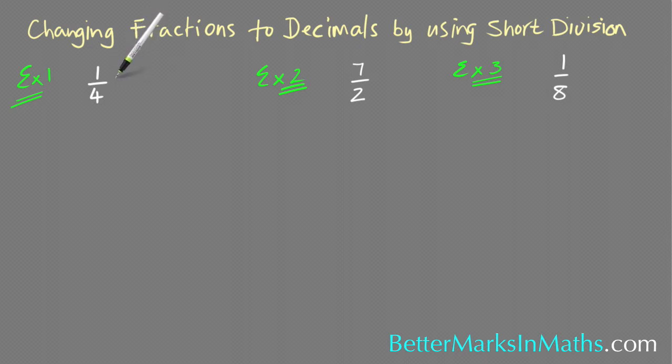It doesn't matter what fraction you've got, you can do it if you know how to do short division. When you set up the short division, it's always the bottom number goes on the outside and the other number, the top number, goes on the inside like that. And you read this: 1 divided by 4.